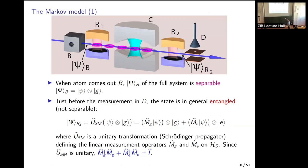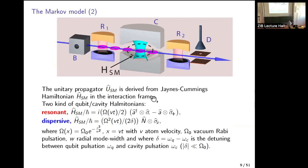To get the Markov process, you start from the big wave function. When the atom exits the box, it is in a separable state. You have completely coherent evolution just before detection — basic linear algebra. The state just before detection, Ψ_{R2}, is a superposition, because U is unitary, giving a partition of a unitary operator with respect to operators G and E, which are two linear operators.